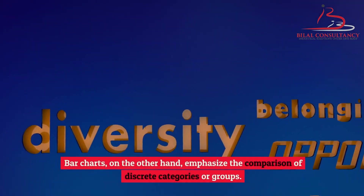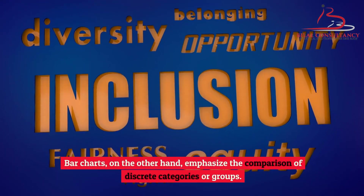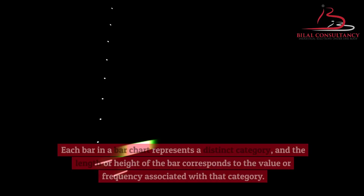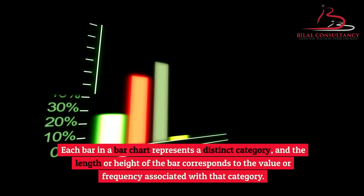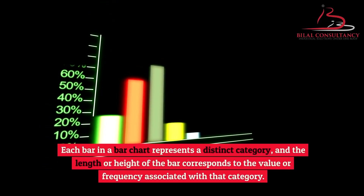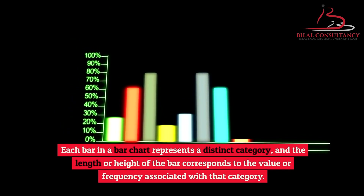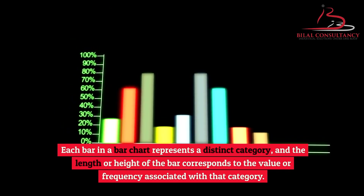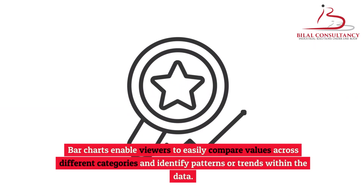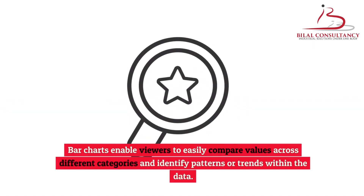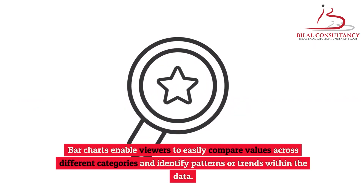Bar charts, on the other hand, emphasize the comparison of discrete categories or groups. Each bar in a bar chart represents a distinct category, and the length or height of the bar corresponds to the value or frequency associated with that category. Bar charts enable viewers to easily compare values across different categories and identify patterns or trends within the data.